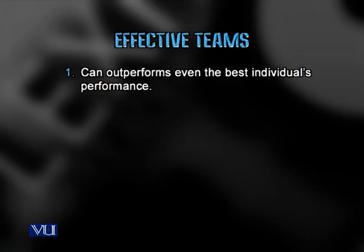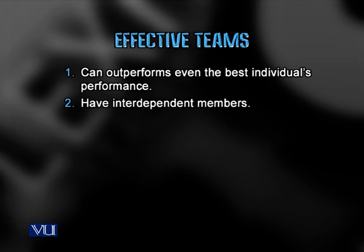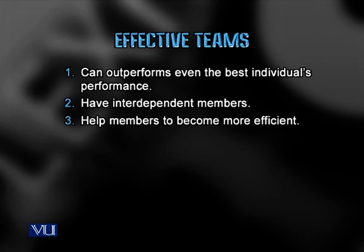How can an effective team be made? Well, it can outperform even the best individuals' performance. Number two — you have interdependent members who can divide their roles. Number three — you help members become more efficient by dividing different tasks, so each one can do their tasks and the total productivity is synergized.